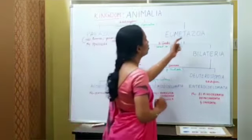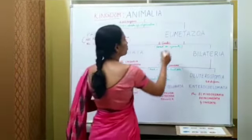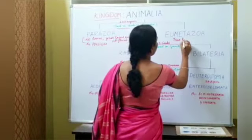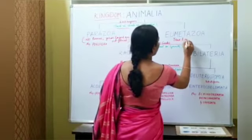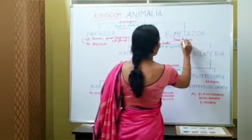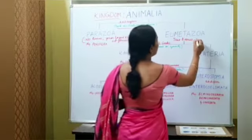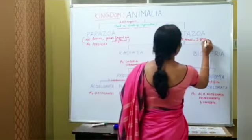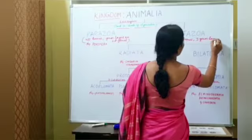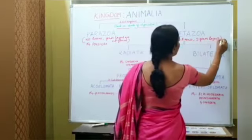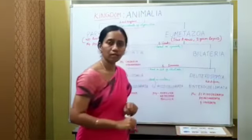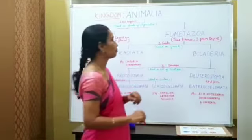In Eumetazoa, true tissues are present and three germ layers are formed. Those three germ layers are ectoderm, endoderm, and mesoderm.